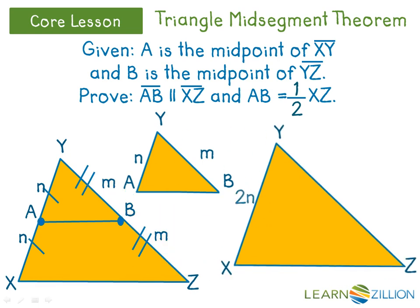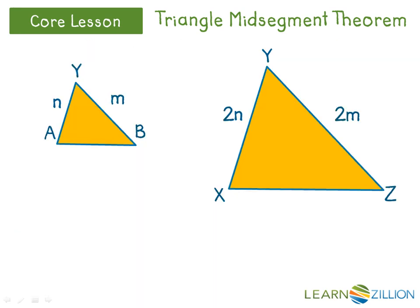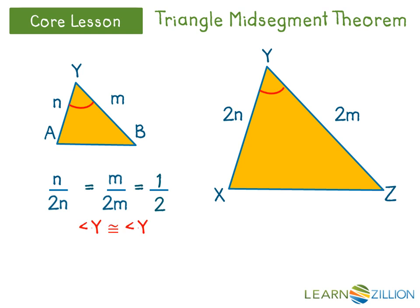To gain a better perspective as to what's happening with the small and large triangles, we will separate them. Notice that the larger triangle gets a side length of 2N for segment XY, and a side length of 2M for segment YZ, due to the fact that each whole side was made up of two segments that had the same lengths of N and M, respectively. Let's check the proportionality of the corresponding sides labeled with N's and M's. We see that N over 2N equals M over 2M, which equals one-half. Since these sides made equal fractions, they are proportional. Now notice that angle Y for both triangles came from the same angle in the original figure. Therefore, angle Y in the small triangle is congruent to angle Y in the large triangle. This is the reflexive property, since they are really the exact same angle.